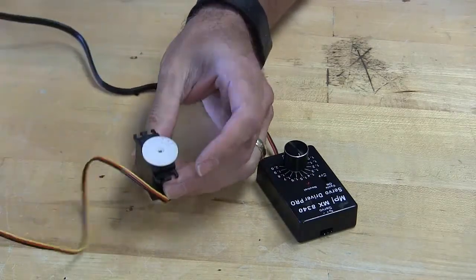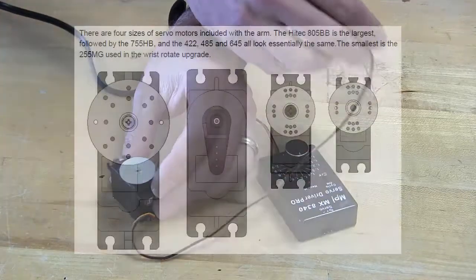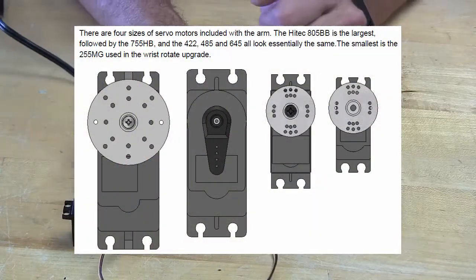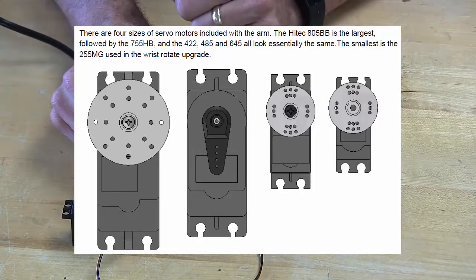The manual explains how servos work and talks about horn positions, but sometimes when you take that horn off, there's no way to tell what center is anymore.